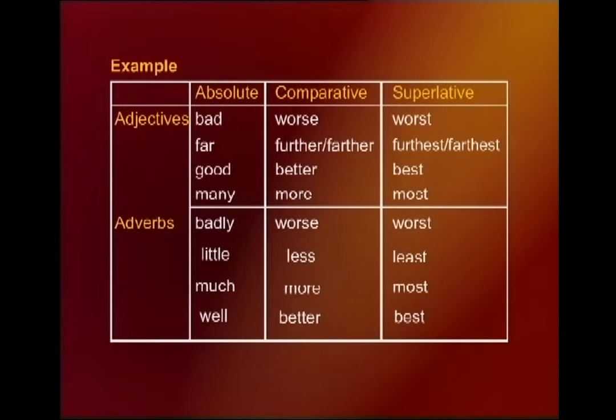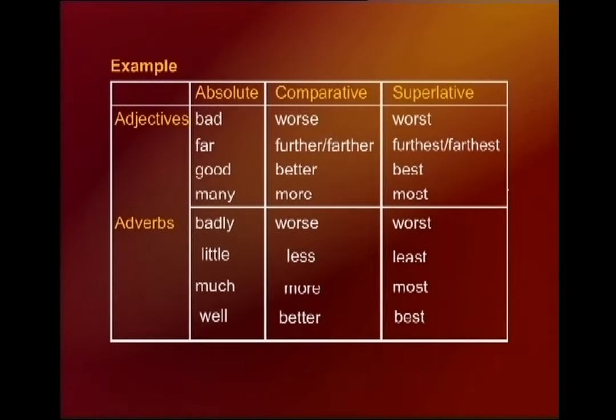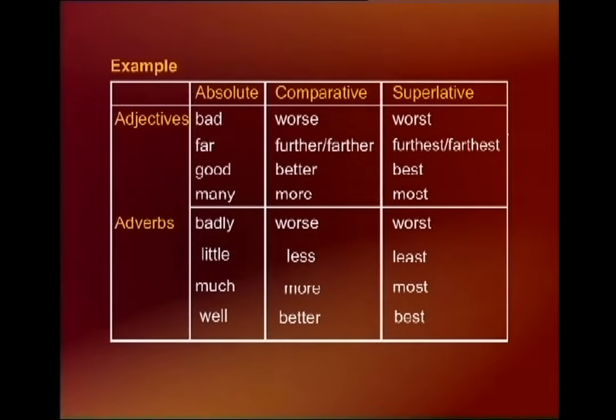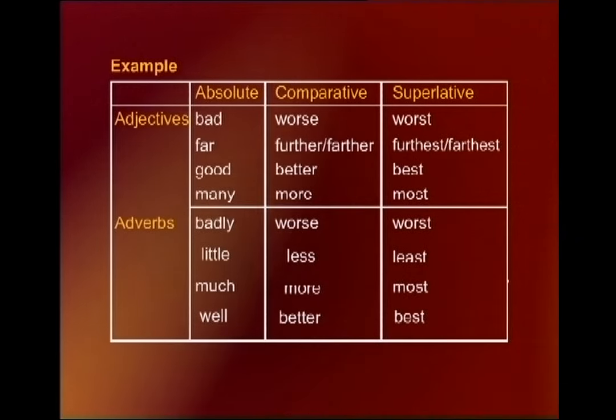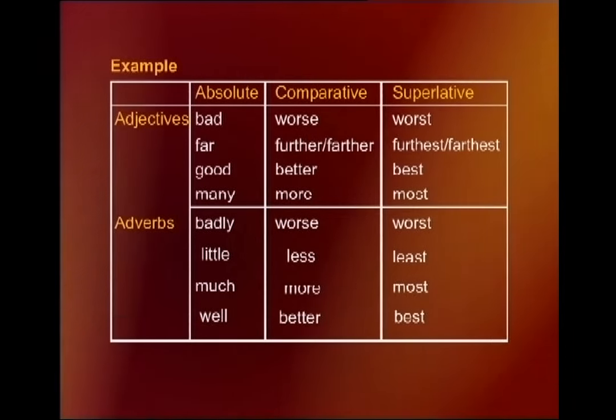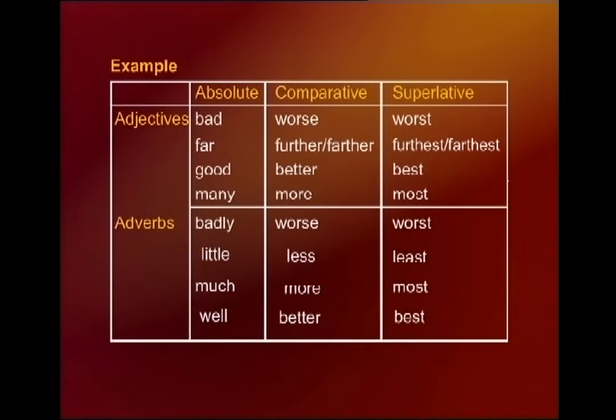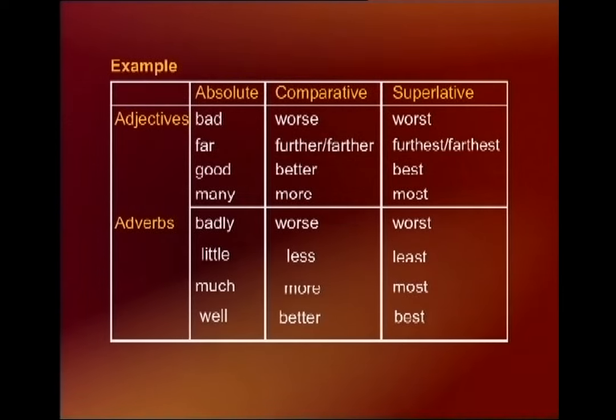There are a small number of adjectives and adverbs that form the comparative and superlative degrees using a different stem. These irregular comparisons include: bad — worse, worst; far — further/farther, furthest/farthest; good — better, best; many — more, most.